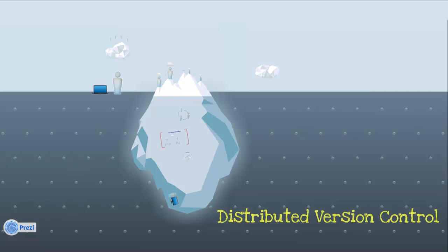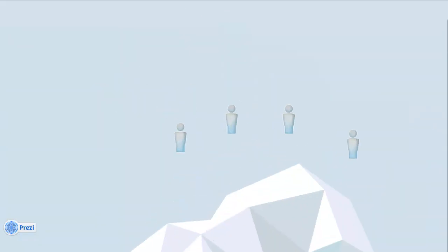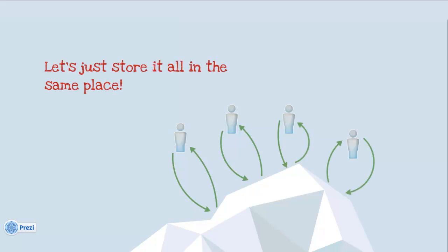So let's look at the naive solution to developers working together, which is a centralized repository solution where all developers check in their code to the same place, or commit if you will, and check out. So let's just store everything in the same place. That's the solution, and it's a very bad solution indeed.